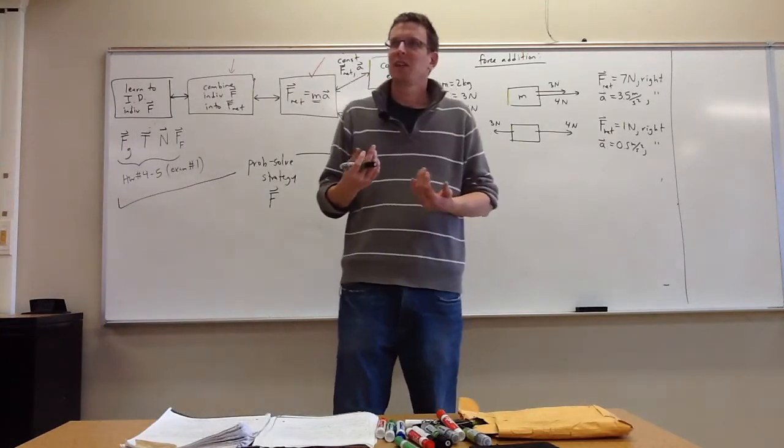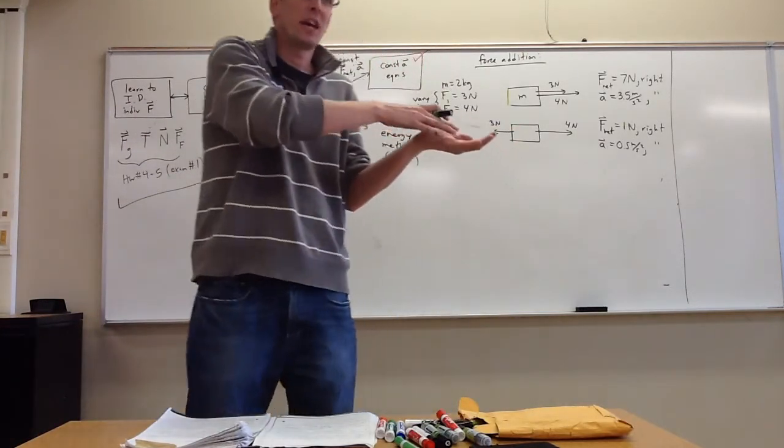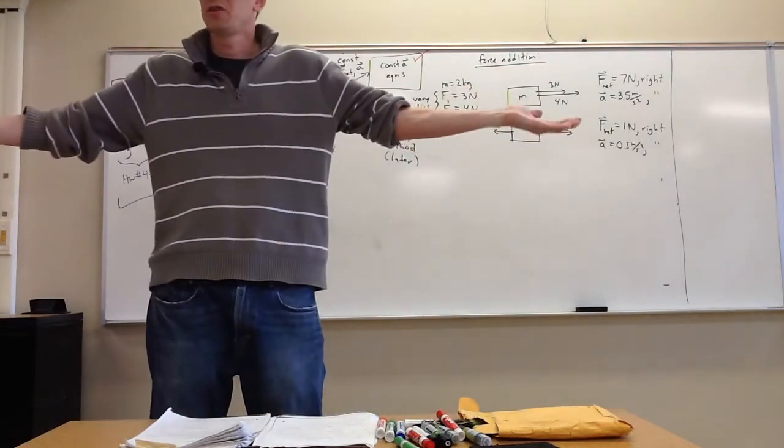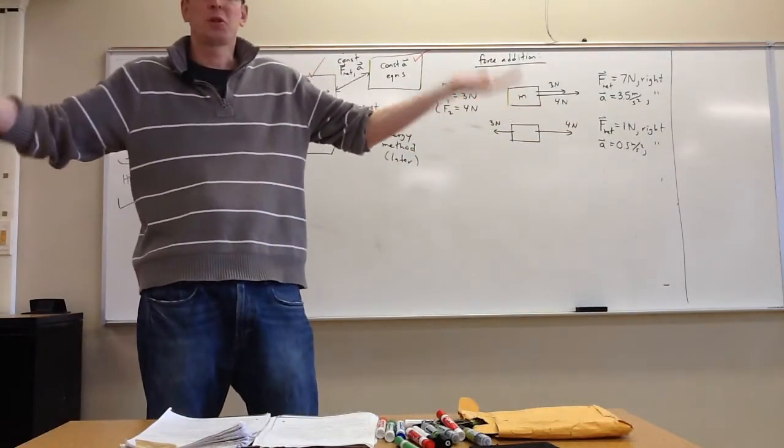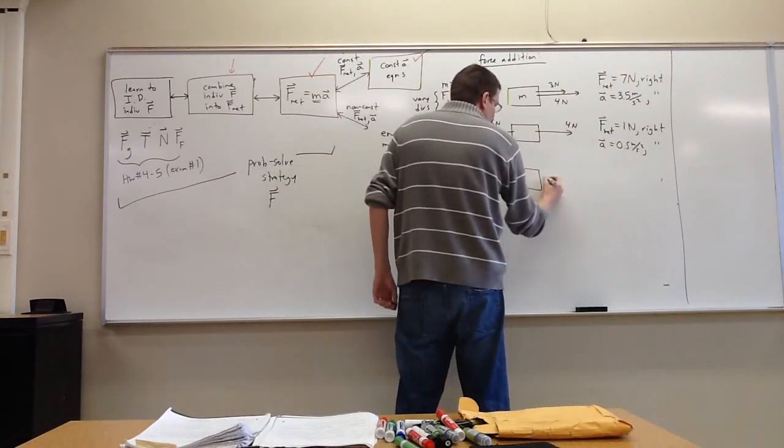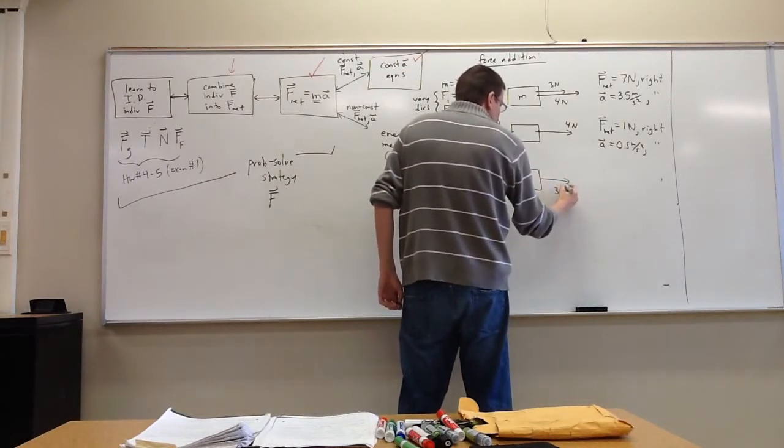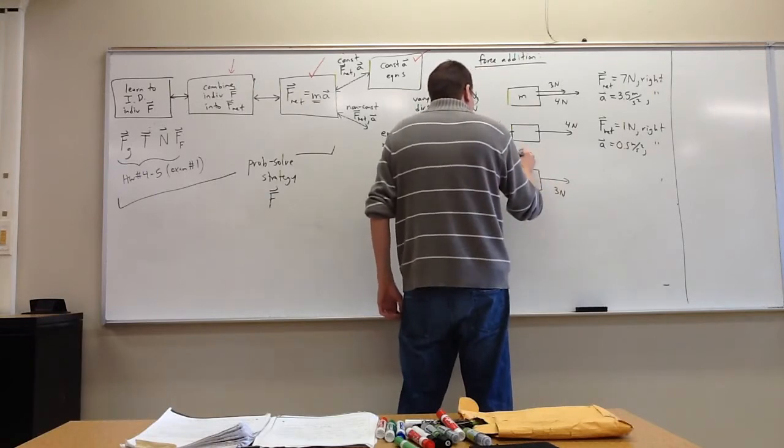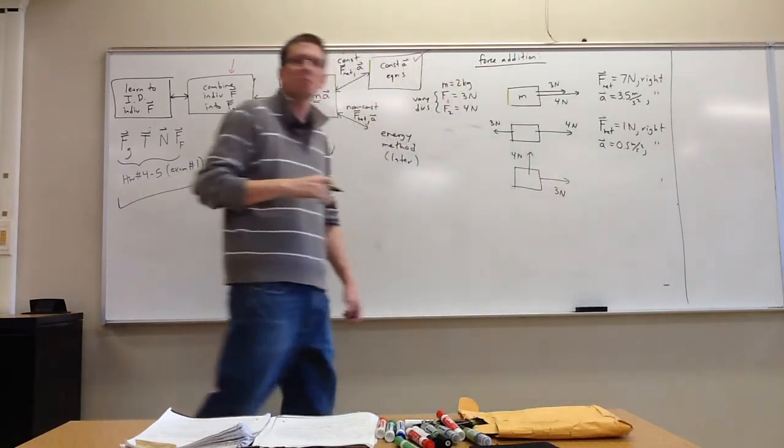Now, those are all pretty easy because they're either totally with each other, so we add them, or totally against each other, so we subtract them. But of course, pushes and pulls can come in all sorts of directions. Let me say it looks like this. 3 newtons, 3 newtons, and 4 newtons. You can pull on an object like that.